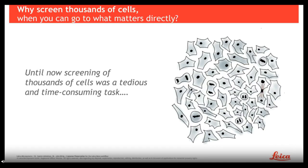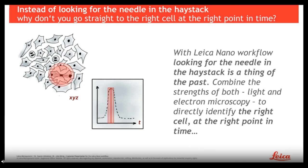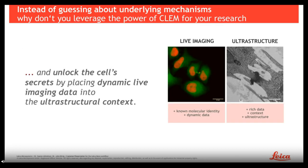When you work in electron microscopy, you know that a lot of workflows start with the sample preparation itself, which can be tedious and very time consuming depending on the application you want to achieve. With the Leica Nano workflow, this looking for the needle in the haystack is a thing of the past. In this workflow, we combine the strength of both light and electron microscopy to directly identify the right cell at the right time point, and unlock the cell's secret by placing dynamic live cell imaging data into the ultra-structural context.